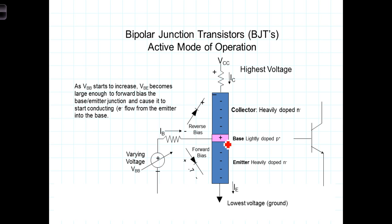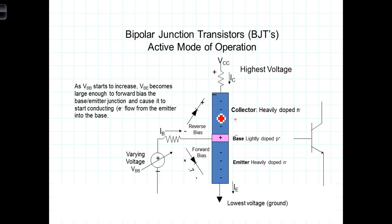An interesting thing happens at the base interface: the collector voltage is greater than the base voltage, so electrons that cross the base-to-emitter P-N junction into the very narrow, lightly doped base region are exposed to this large voltage differential and are swept across the base and out through the collector. So even though the base-to-emitter junction is forward biased and the base-to-collector junction is still reverse biased, significant current still flows because electrons enter at the forward-biased junction and are swept into the collector. This state — where the base-to-emitter junction is forward biased and the base-to-collector junction is reverse biased — is known as the active mode of operation, or the transistor is said to be in the active region.